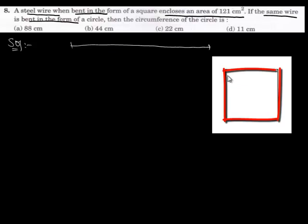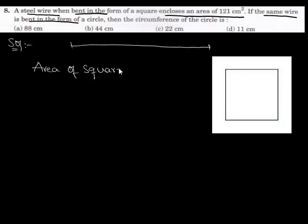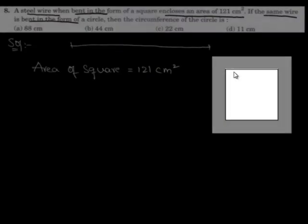Let's work out the problem. In the question, we have a steel wire of unknown length. In the first case, it is bent in the form of a square, and we are given the area of the square is 121 cm². We define area as the surface covered by the closed figure.